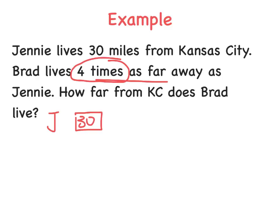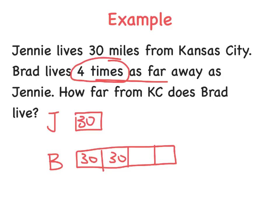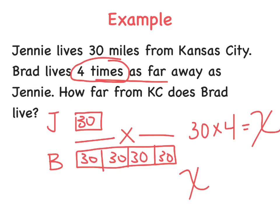Brad lives four times as far away, so his bar picture will have four spots, and each one will be 30 because we're comparing it to Jenny's 30. We're trying to find his total distance, so that is X — I could have used a different variable like D. Now we have our picture done. To figure out how far away Brad lives, I would do 30 times 4 equals X, and X equals 120.